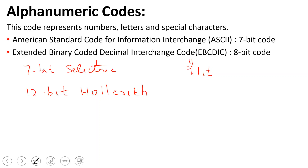Next is error-correcting and error-detecting codes — the last classification. This will be covered in a new separate video. To summarize the codes covered: binary BCD code (8421), XS3 code, gray code — these are the main codes, and they can be classified as self-complementing, sequential, weighted, or non-weighted depending on their properties.